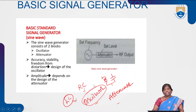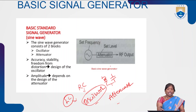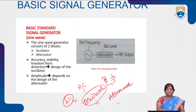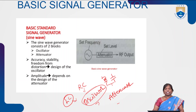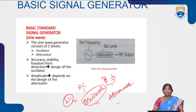By using the oscillator we generate a frequency, and with the help of the attenuator we set the amplitude levels. While designing the oscillator we have to consider two constraints: accuracy and stability, and freedom from distortion. The oscillator should provide maximum accuracy, maximum stability, and there should not be any distortion.